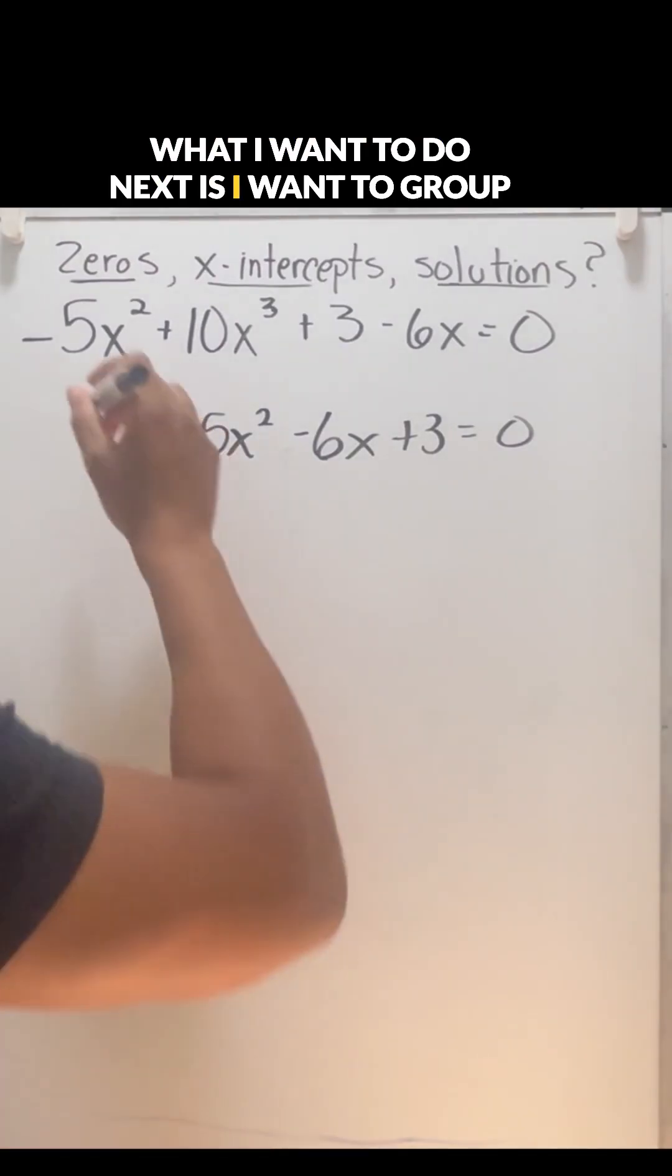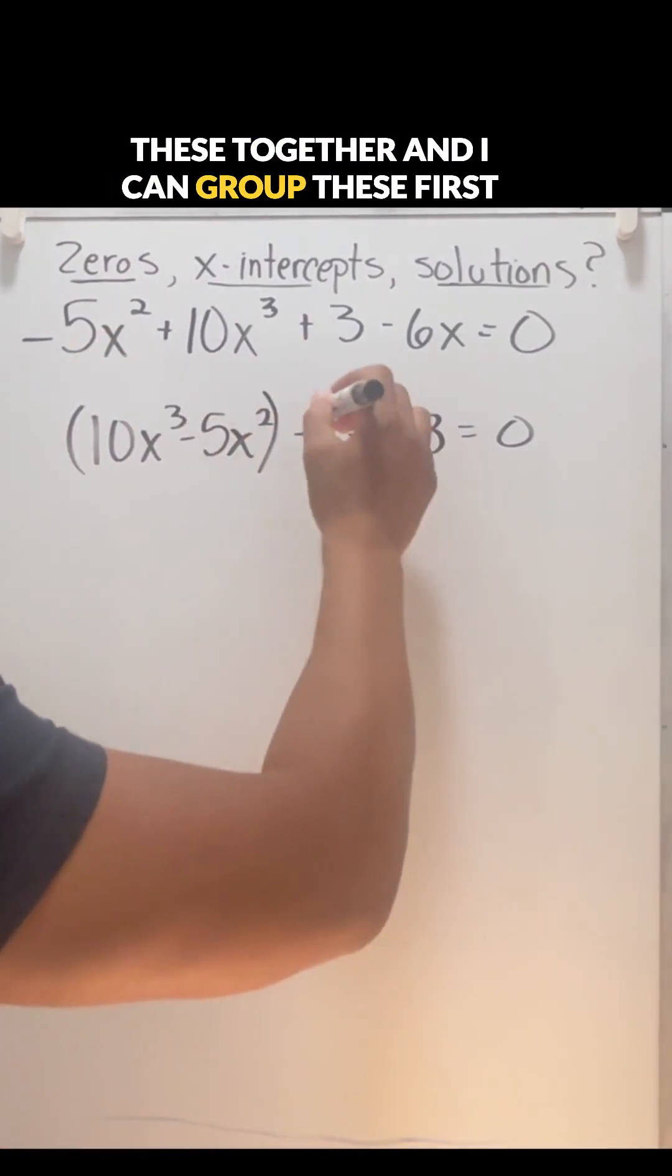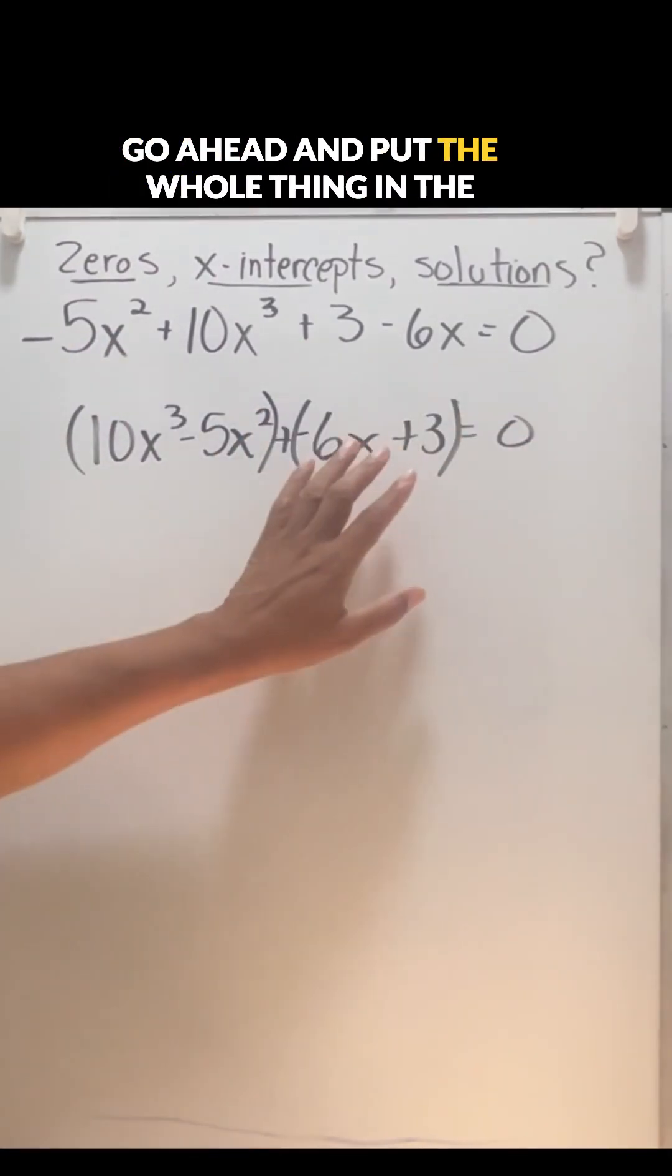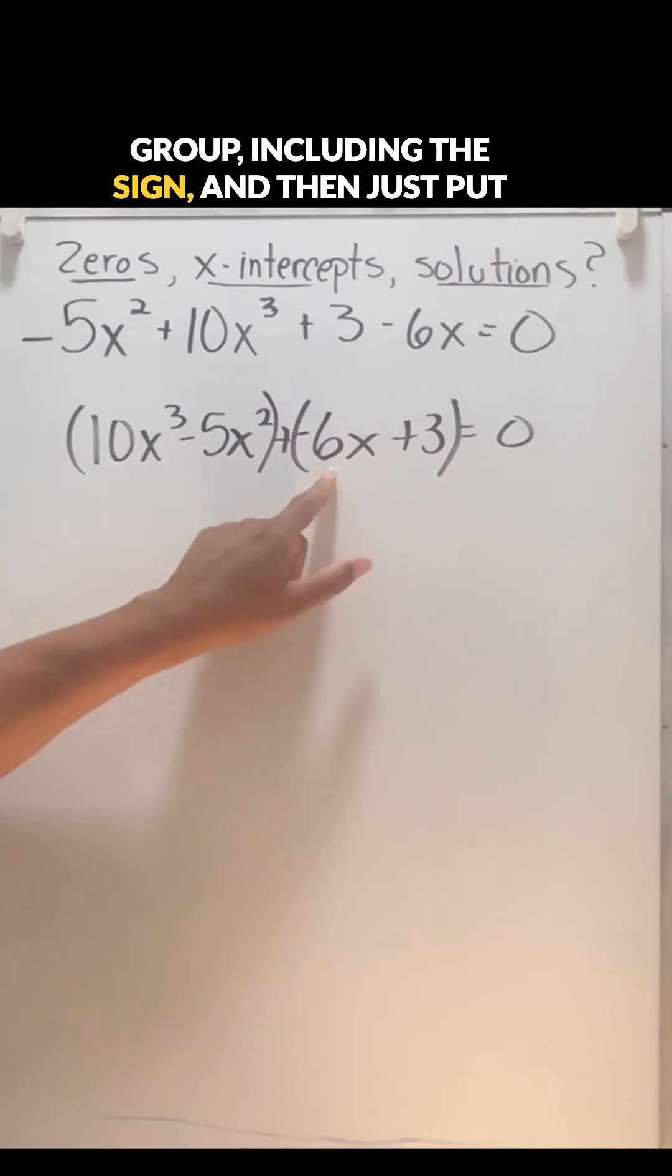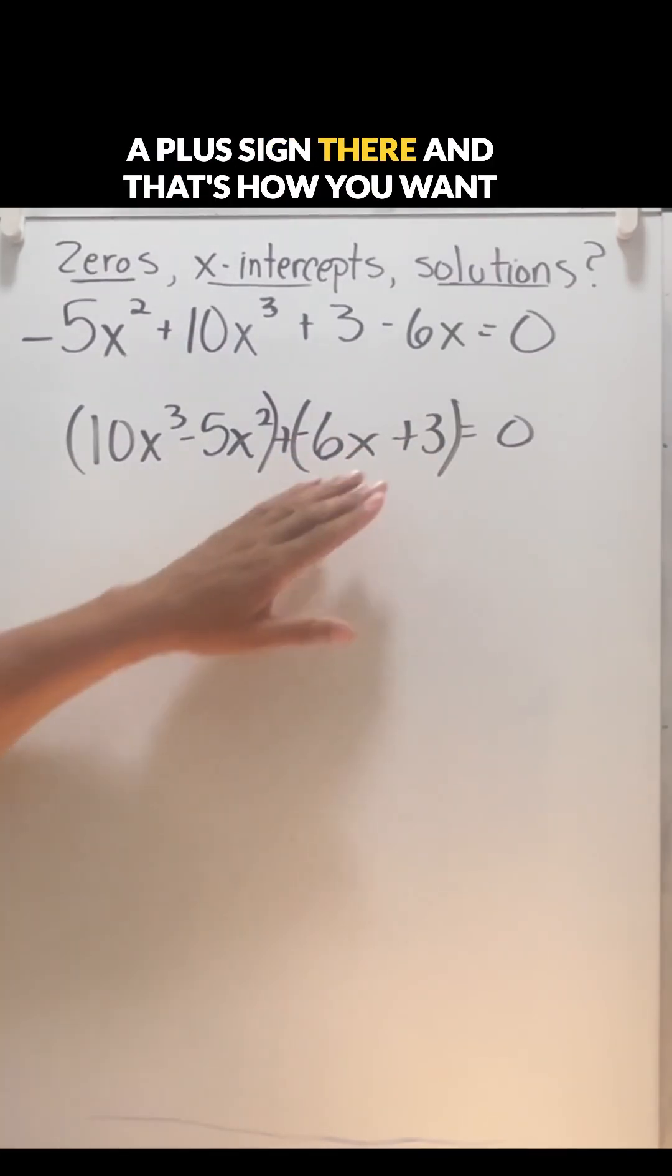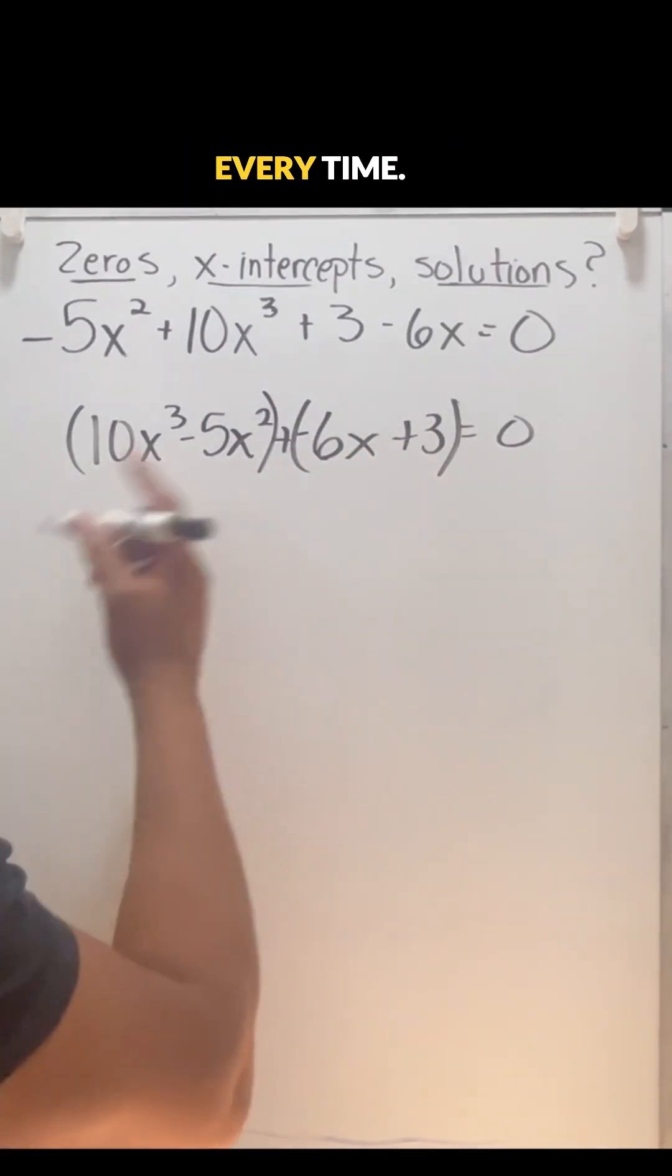What I want to do next is group these together. I can group these first two together and I'll group these together. Go ahead and put the whole thing in the group, including the sign, and then just put a plus sign there. That's how you want to deal with that every time.